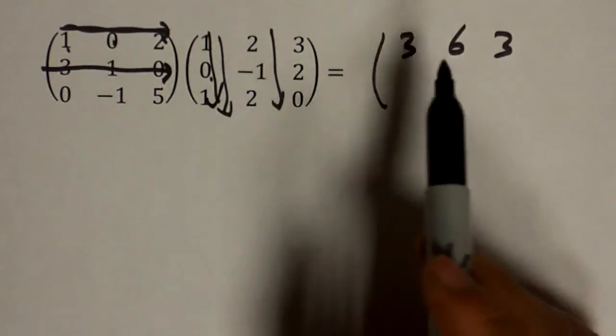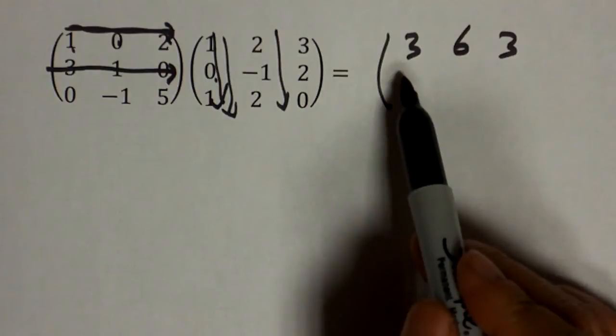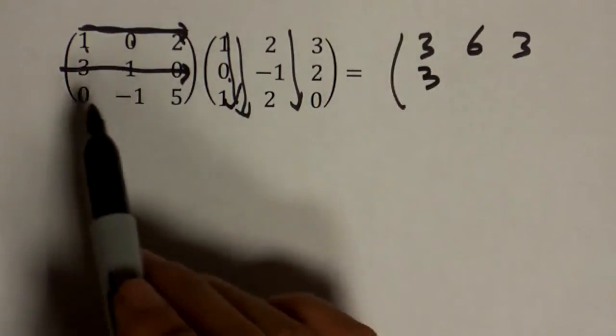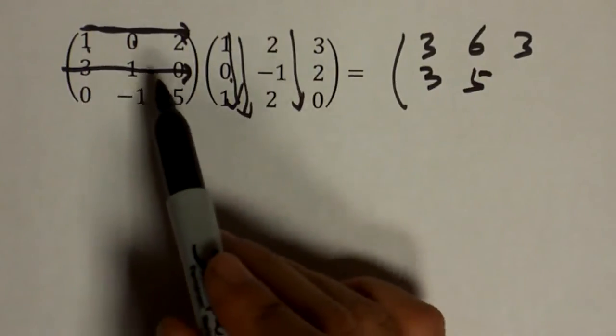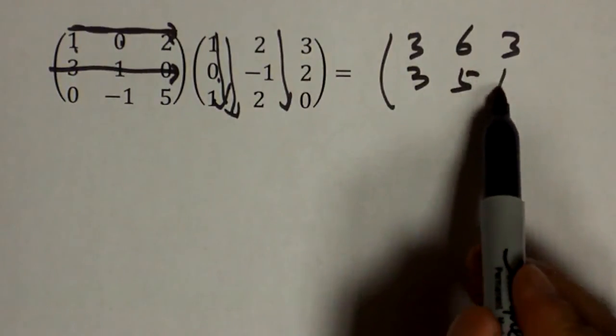This times that gives you 1, 0, so that's 3. 6, that's 5. 3 times 3 is 9. 1 times 2, that's 11.